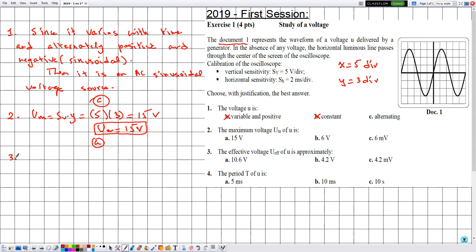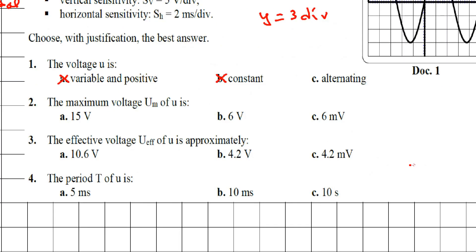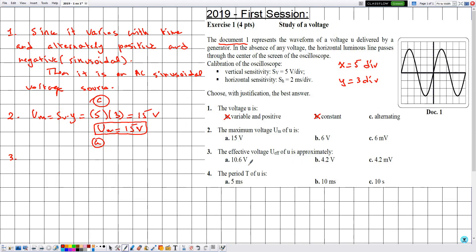In number three, they are telling me the effective voltage U effective of u is approximately 10.6 volts, 4.2 volts, or 4.2 millivolts. Approximately means almost close to. In order to choose the correct answer, let's calculate the effective voltage, which is given by the maximum voltage divided by square root of 2.